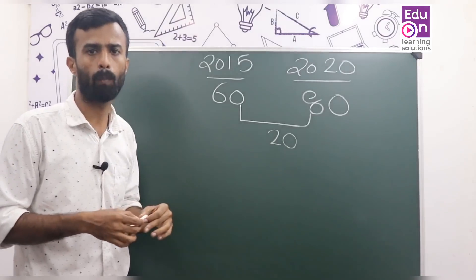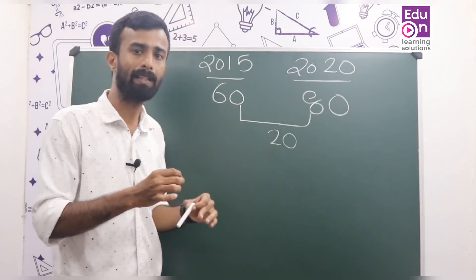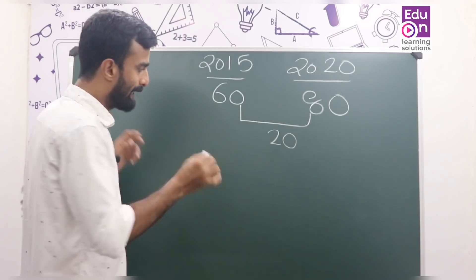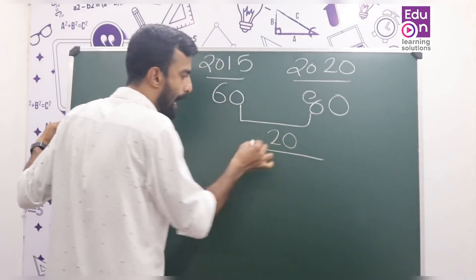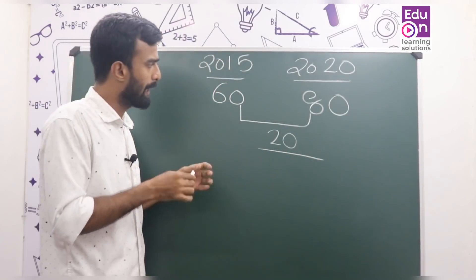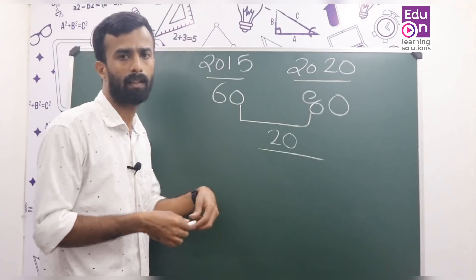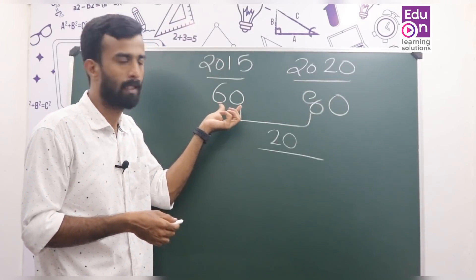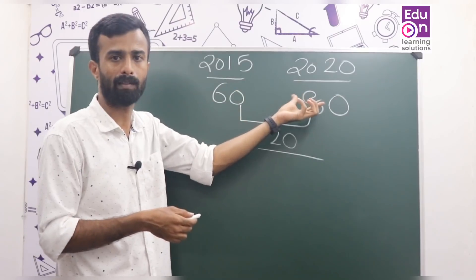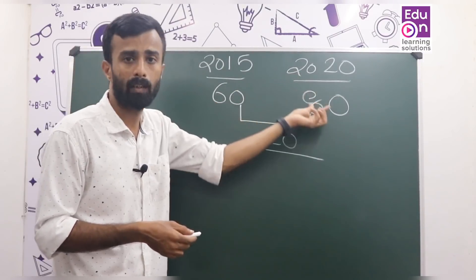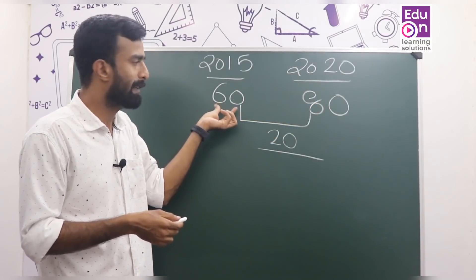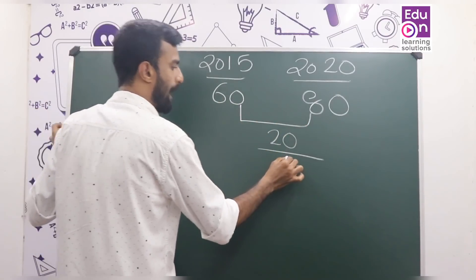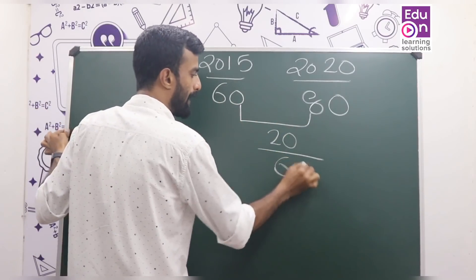The correct value is 60 and 20. Now we have to calculate the percentage of increase. This is the amount of increase, divided by the original value. We will try to calculate the amount of increase. What is the amount of increase? Divide by the amount of increase.